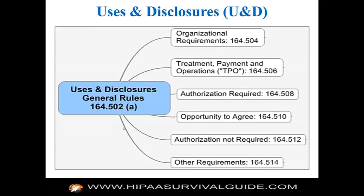The general rule in 164.502(a) is the starting point to determine whether or not there's been a violation of the privacy rule — for many reasons you're going to want to know when the privacy rule has been violated. If you're going to sanction employees, you need to specify how the privacy rule was violated. If there was a breach, then the privacy rule was violated by definition and you're going to want to document how. You would start with the general rule in 164.502(a) and go through treatment, payment, operations; did you have the authorization; did you give the individual an opportunity to agree? That's how you work through the privacy rule to determine whether it had been violated.